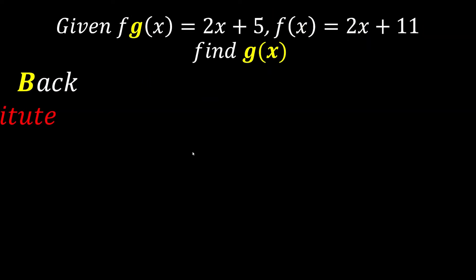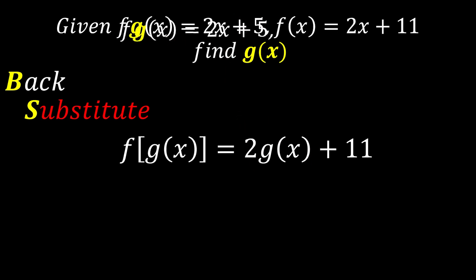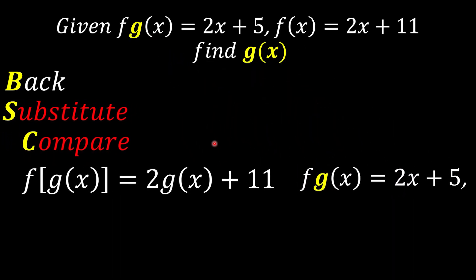The C in BSC stands for compare. Since both expressions represent fg(x), they must be equal. We put them side by side: 2g(x) plus 11 must be equivalent to 2x plus 5. Since we're solving for g(x), we move everything unnecessary to the right-hand side — plus 11 becomes minus 11.